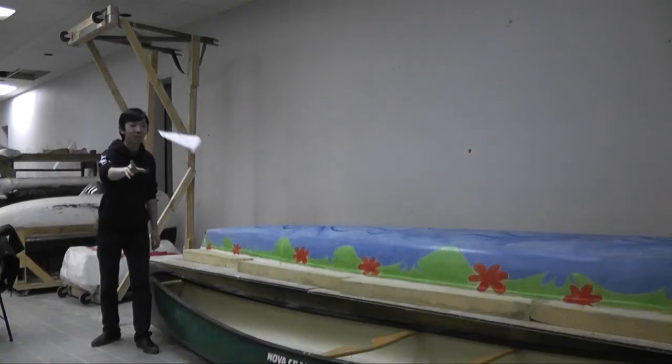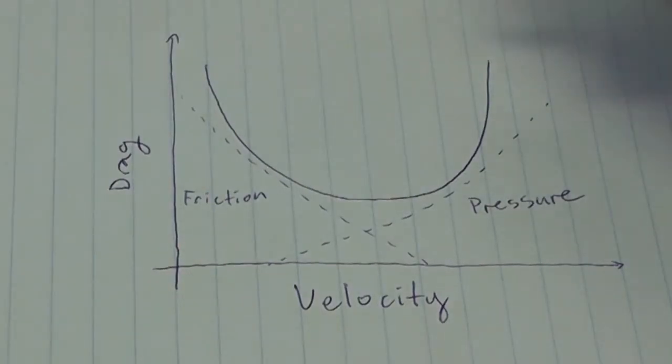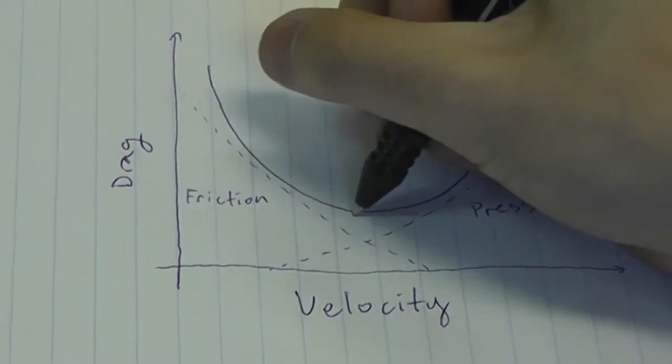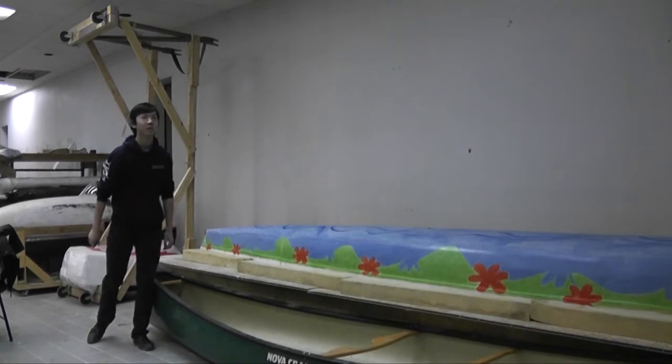if you throw your plane at a very low speed or a very high speed, you end up with a lot of drag. So your plane won't travel as far. But there is a point where if you come down from either side, you'll reach a local minimum. And that's the point that you want if you want your paper airplane to travel the furthest.